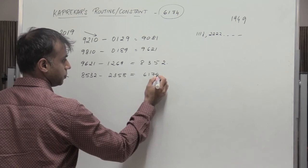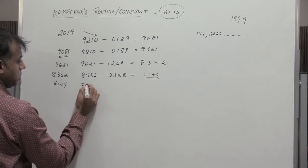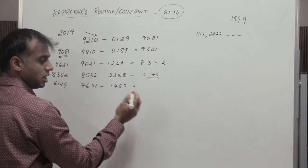So I have got this number 6174. So now what do I do? Again consider this number 6174. Write it in the descending order. 7641 minus 1467. So surprisingly I get 6174.